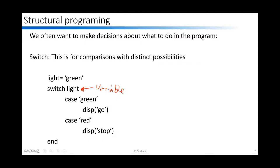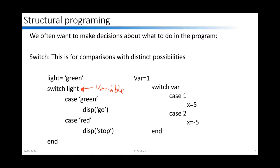We can do this with text or with a numeric variable. If we had a variable 'var' that was only ever going to be one or two, we could write: switch var, case 1: x equals 5; case 2: x equals negative 5; end. So we can cause the code to make decisions for us.